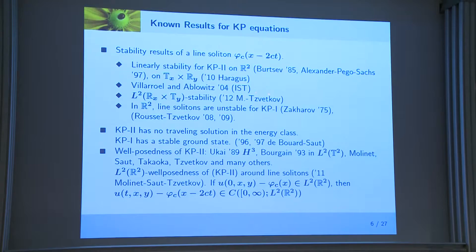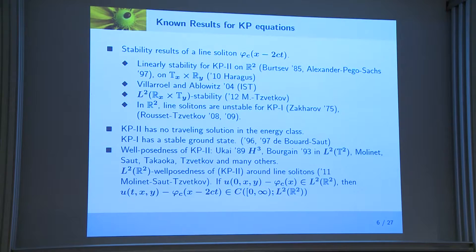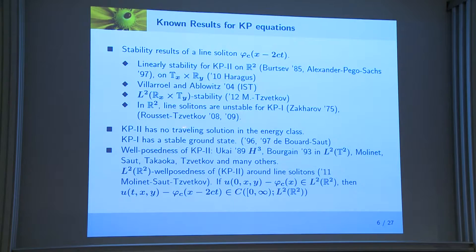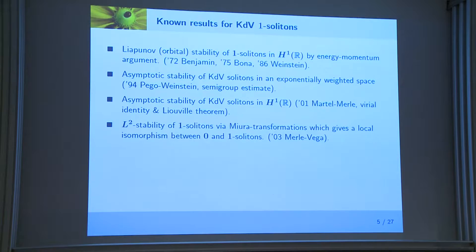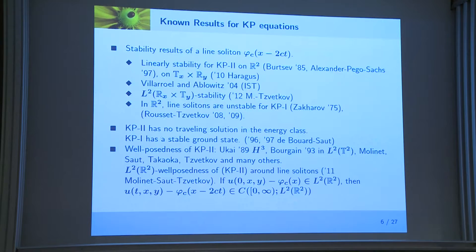For the KP2 equation, it is expected that line solitons are stable; for the KP1 equation, line solitons are expected to be unstable in R2. The difference is related to the sign of the Hamiltonian. For KP1, it has a stable ground state, proved by Dubois and others. As for well-posedness, the first result was obtained by Ukai in 1989. Later, Bourgain, using his Fourier restriction theorem, proved well-posedness of the KP2 equation, and subsequently Molinet, Takaoka, Tzvetkov, and others improved Bourgain's result in many directions.